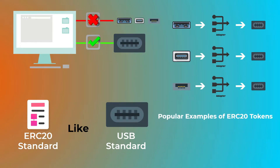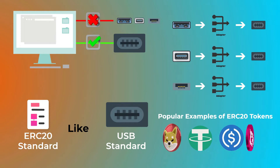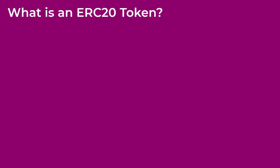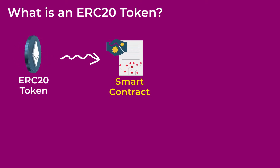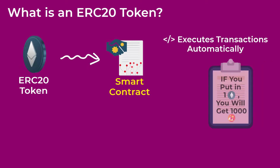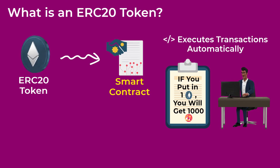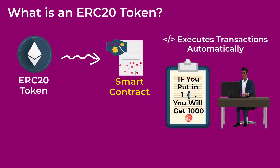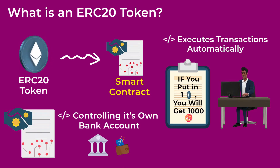Some popular examples of ERC-20 tokens are Shiba Inu, Tether, USDC, and the Uniswap token. An ERC-20 token is basically a smart contract — a piece of code that executes transactions automatically when certain conditions are met. This smart contract has a wallet address and can store, send, and receive cryptocurrencies, just like a crypto wallet. You can think of a smart contract simply as a piece of code that controls its own bank account.